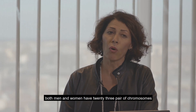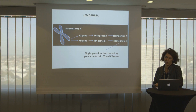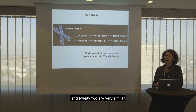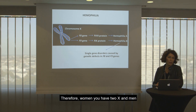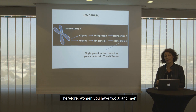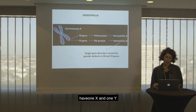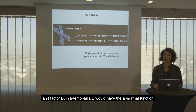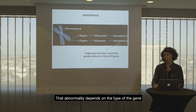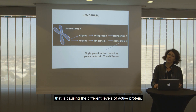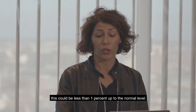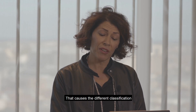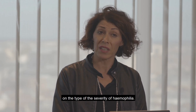In a human body, men and women both have 23 pairs of chromosomes. 22 are very similar, and one pair is different — for women you have 2X, and for men there are 1X and 1Y. If the genes coding for factor VIII in hemophilia A and factor IX in hemophilia B have abnormal function, that abnormality depends on the type of gene, causing different levels of active protein — from less than 1% up to the normal level — making different classifications of hemophilia severity.